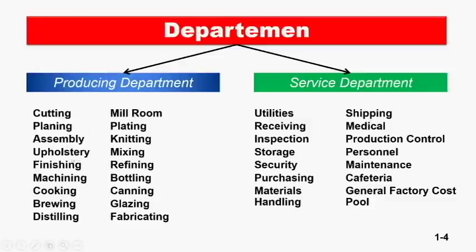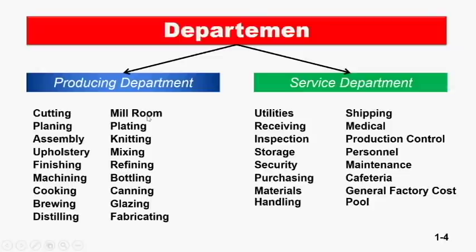Contoh lain producing department meliputi: cooking, brewing, distilling (distilasi), mill room (penggilingan), plating, knitting, mixing, refining, bottling, canning, dan fabricating. Inilah nama-nama yang biasa digunakan dalam satu pabrik, dikaitkan dengan aktivitas yang dilakukan di pabrik tersebut.